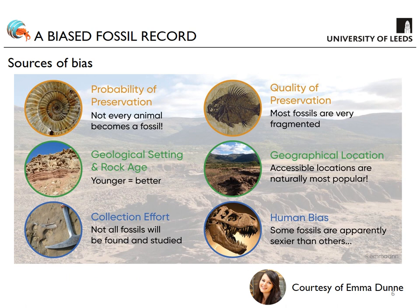The fossil record is not only incomplete, but also biased. The levels of incompleteness through time are probably not consistent — they're dependent on a number of things. This infographic by Emma Dunn from the University of Birmingham effectively shows all the biases affecting our diversity patterns. We have probability and quality of preservation: not everything will be fossilised, depending on preservable hard parts, the environment, and preservation quality. We may not be able to identify a fossil down to species or genus level because of poor preservation quality.